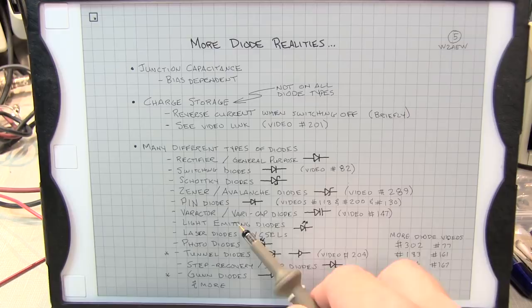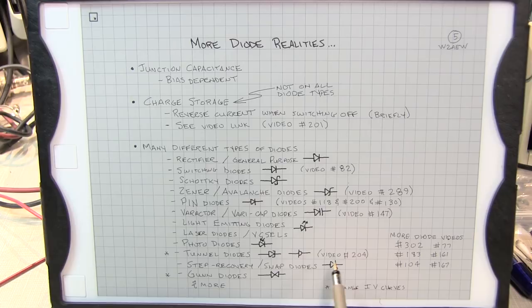Step recovery diodes or snap diodes, these diodes have got a very abrupt and fast reverse characteristic when you go from forward bias to reverse. So fast, in fact, that they are used oftentimes in frequency multipliers and comb generators and RF applications. There's another diode called a Gunn diode, which is very similar to some of these other non-linear diodes like the tunnel diode, has some RF applications there as well. And there's many other esoteric versions of diodes that are used in specialized applications.